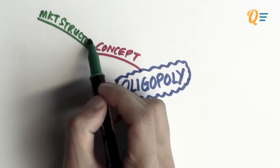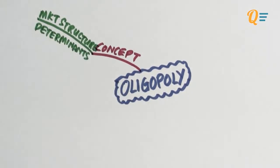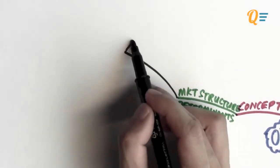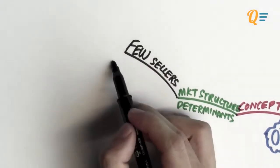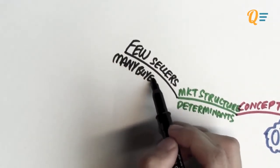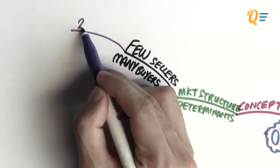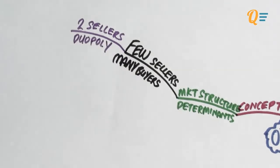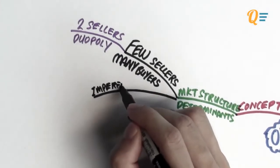The first thing we always do is talk about the determinants of this particular market structure. The first determinant is the number of agents in this market — there are going to be a few sellers serving many, many buyers. For the purpose of Introduction to Economics, we're only going to be talking about two sellers in this market, and we call that a duopoly.